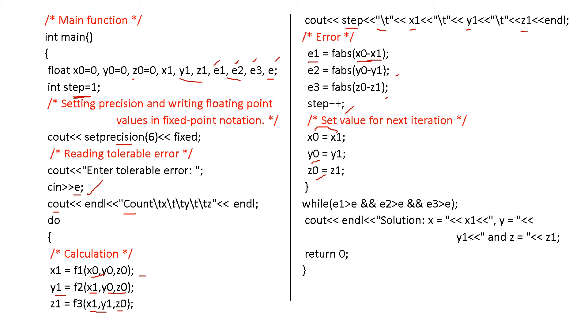It will be continued until, that is, while, if E1 value is greater than E and, logical and, E2 is greater than E and, E3 is greater than E. If the difference of the previous value of the variables and the current value of the variable is greater than the tolerable value E, you have to continue the loop. You have to carry on with the iterations. When it is less than E, you have to print the output.